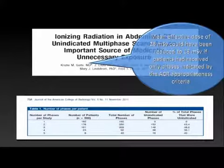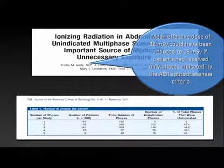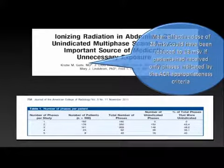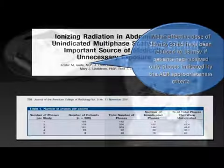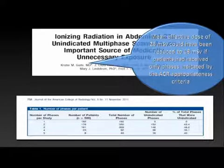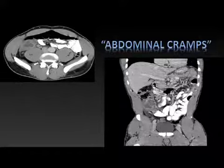Fred Lee's group at Wisconsin did an interesting survey looking at the added ionizing radiation from unindicated multi-phase scans. They went to the ACR appropriateness criteria for recommended scans relative to indication and surveyed a bunch of practices. They found that many sites do additional phases not recommended by the ACR. The point of this article is that many sites are probably over-phasing and over-irradiating, doing additional sequences that have very little added value.